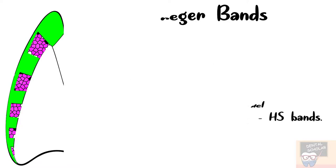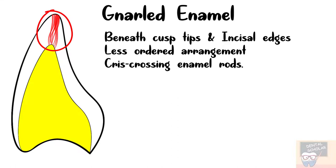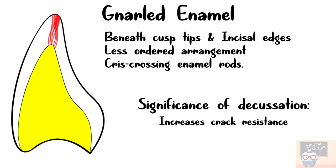Gnarled enamel is seen beneath the cusp tips and incisal edges. Here the enamel rods show a less ordered arrangement — they appear criss-crossing each other, and this criss-crossing is more extensive than what is seen on the lateral surfaces. The significance of this decussation of enamel rods, whether in gnarled enamel or on lateral surfaces, is that it increases crack resistance of enamel, making it more resistant to crack propagation.